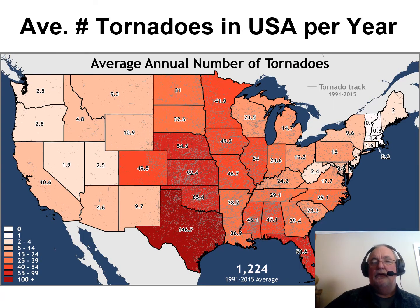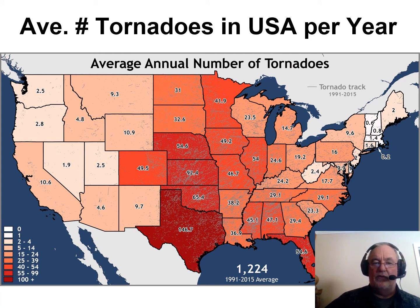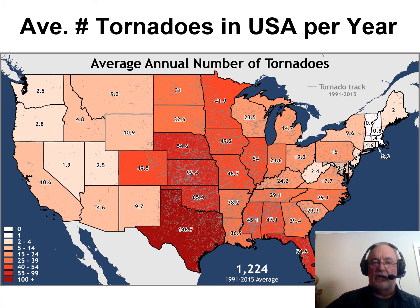Looking at the average number of tornadoes in the USA per year, almost every state has at least some tornadoes over the long period 1991 to 2015. California averages about 10 per year — they tend not to be very strong or large, but can still be quite destructive. Texas and Oklahoma show the highest numbers.